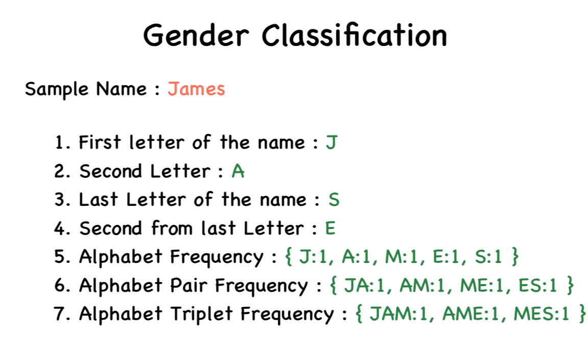And the other alphabets are zero. The frequency distribution of alphabet pairs is 1JA, then we have 1AM, 1ME, 1ES, and zero of the other possible pairs. And then we have the frequency distribution of alphabet triplets, which is 1JAM, 1AME, 1MES, and zero of the other possibilities. Okay, that's cool. Like this, we can convert every name into a list of features.